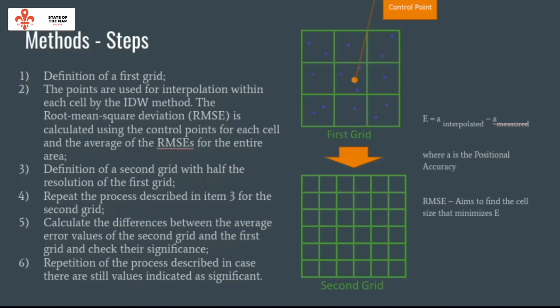Step three: definition of a second grid with half the resolution of the first grid. Step four: repeat the process described in step three on the second grid. Step five: calculate the difference between the average error values of the second grid and the first grid, and check its significance. Step six: repeat the process if values still indicate significant differences.